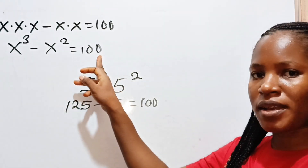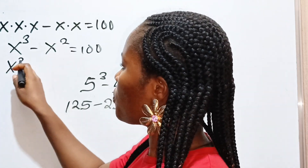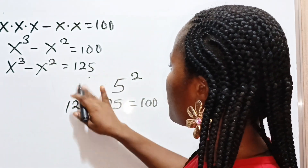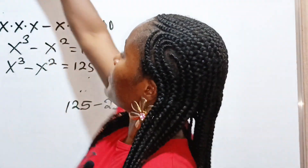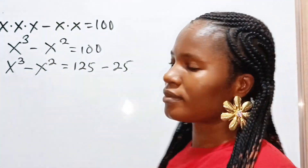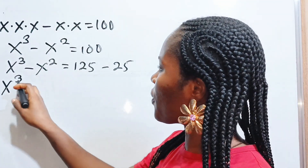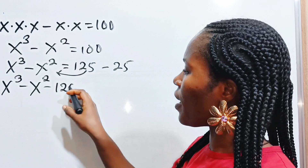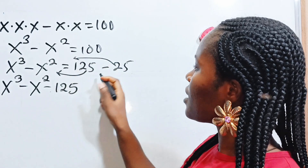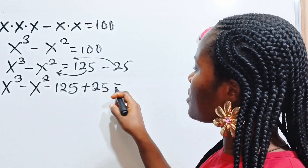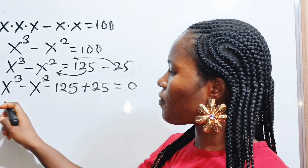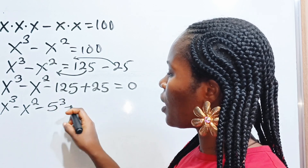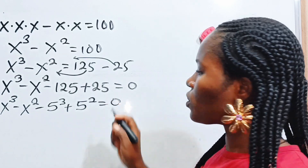So that is exactly what we are going to replace this with. We have x to the power of 3 minus x to the power of 2 is equal to 125 minus 25. Now we continue. Let's transfer the constants to this side: we have minus 125, and minus changes to plus, so plus 25 is equal to 0.